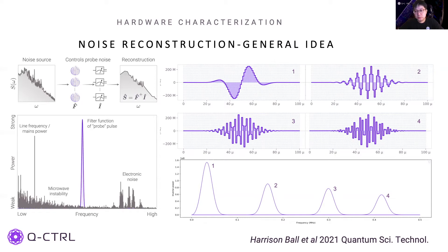On the top right, we show controls that are generated by modulating a Gaussian signal with sine functions of different frequencies. By changing the frequency, we have a sequence of filter functions that scan the frequency range we are interested in. Once we have the measurements and filter functions, it becomes an inverse problem to identify the underlying noise spectrum. In this presentation, we will show a novel approach to solving this inverse problem using convex optimization.